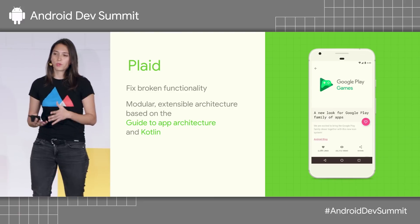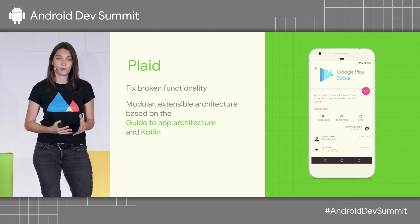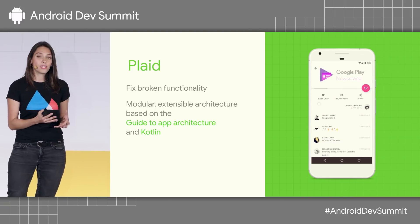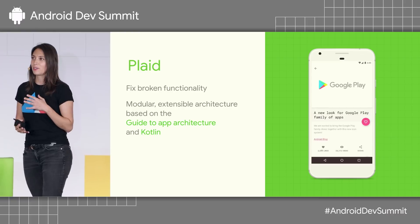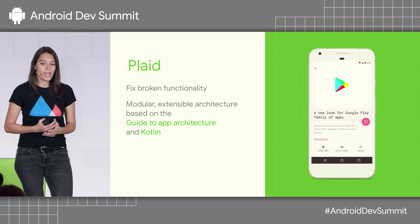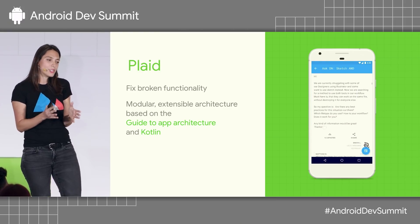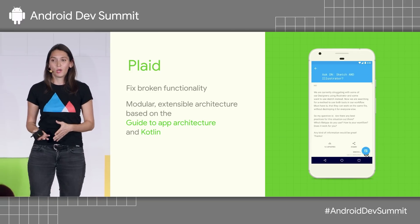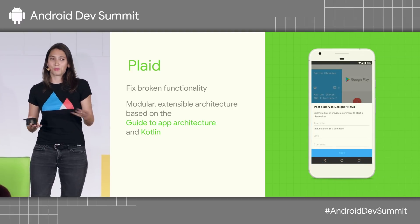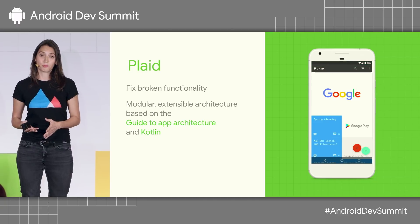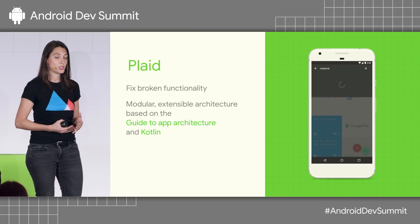Apart from fixing the functionality, we also knew that we wanted to go towards something that's modular and extensible from the architecture point of view. But Plaid was developed as a UI sample, not as an architecture sample. So you won't be surprised to see all the tight dependencies in the code — code that was actually a bit behind, because Nick started building this in 2014. At that time, we didn't have the guide to app architecture that we released last year. So we knew that we wanted to rebuild Plaid in the right way, to have it in a good state for any future changes.